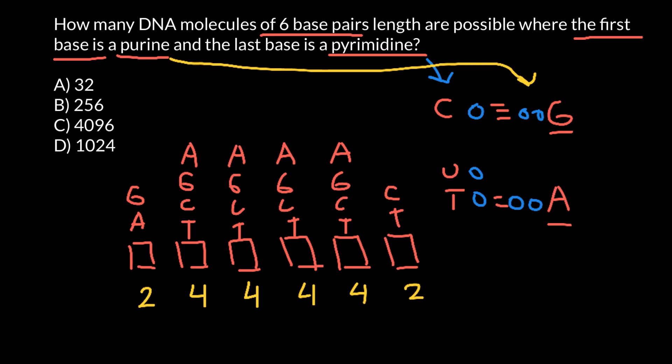Now, in order to find the number of different combinations, we just have to multiply all these numbers. And if we multiply all these numbers, we are going to get 1024, which is answer D.